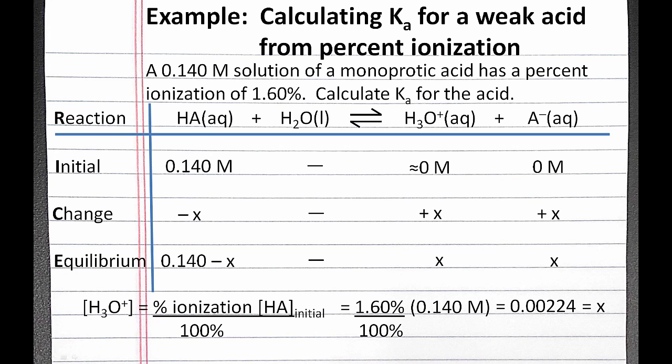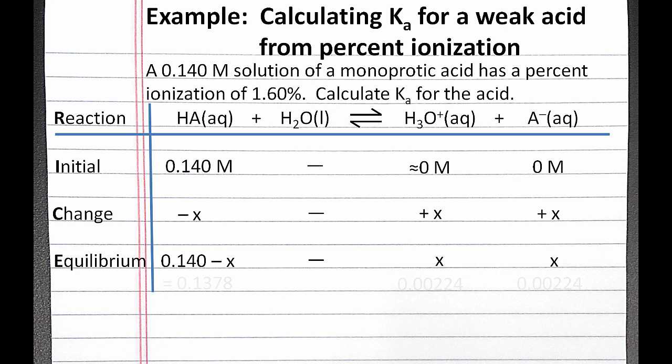Using this value of X, we can calculate the equilibrium row. For our equilibrium concentration of our weak acid, it's 0.1378. And for our equilibrium concentration of hydronium and our conjugate base, it's 0.00224, which is our value of X.